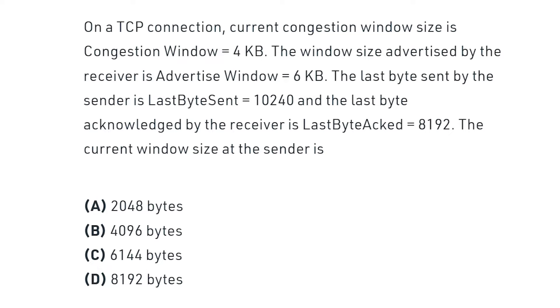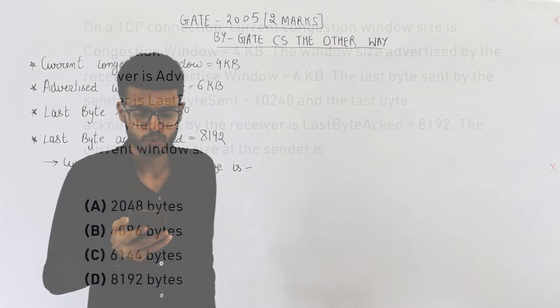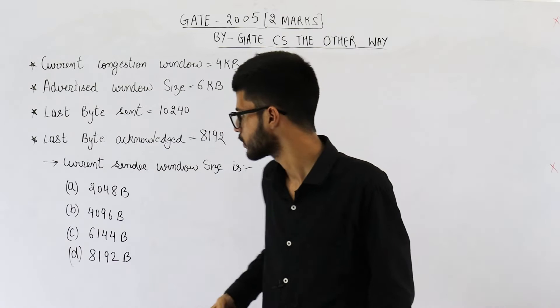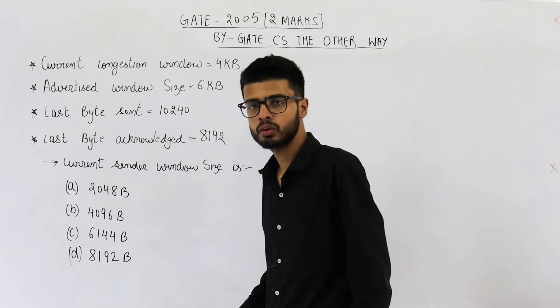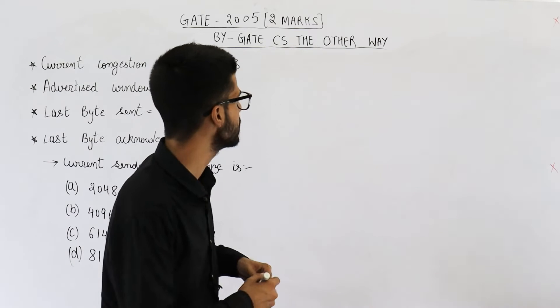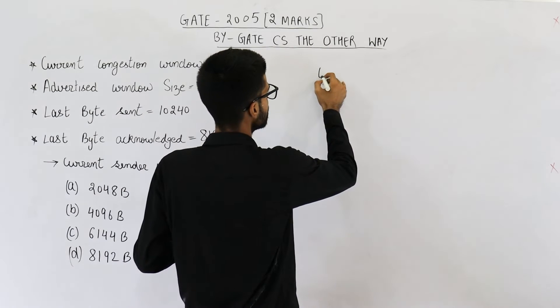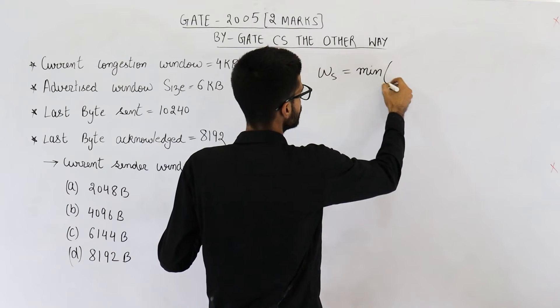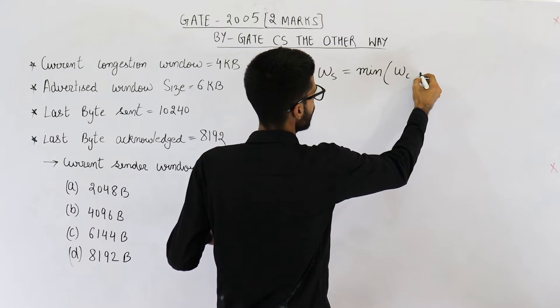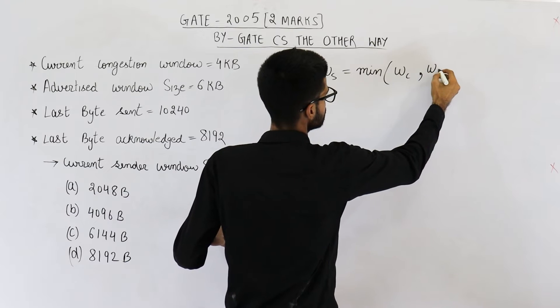The current window size at the sender is... So they have given you four options. I have noted them down. Now you very well know that sender window size will be minimum of congestion window or receiver window.